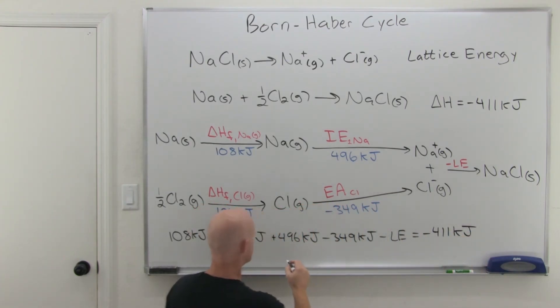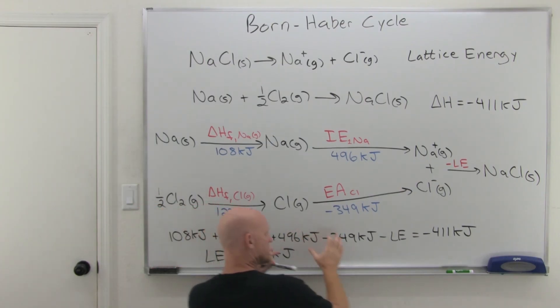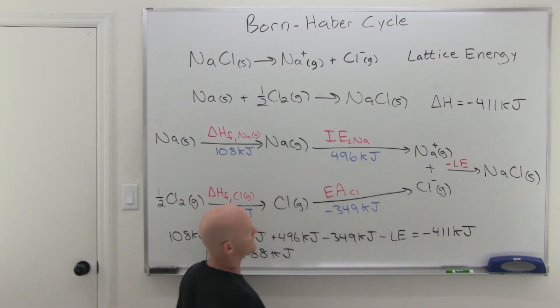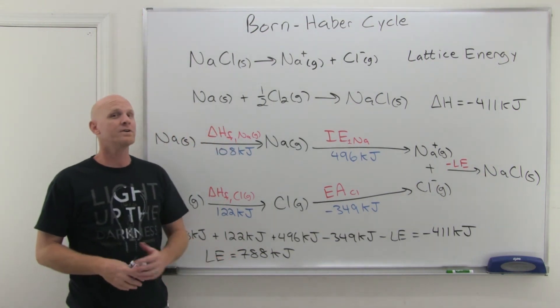If you go ahead and solve for lattice energy here, you're going to get 788 kilojoules. So if you take and move all of this stuff over to the other side, you'd end up with negative lattice energy equals negative 788 kilojoules, which means that the lattice energy equals 788 kilojoules. And that's all there is to it.